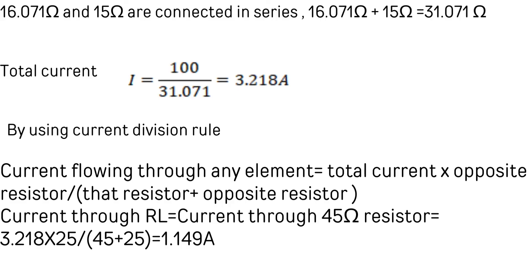Total resistance is 16.071 + 15 = 31.071 ohms. Total current I = V/R = 100/31.071 = 3.218 amperes. Using current division, the current through the 45 ohm branch equals total current multiplied by the opposite resistor divided by the sum of both resistors: IL = 3.218 × 25/(45 + 25) = 1.149 amperes.